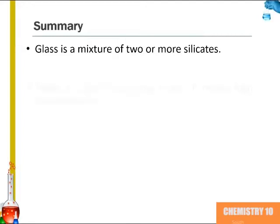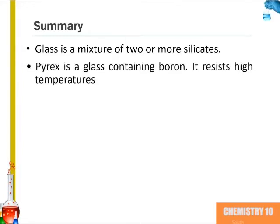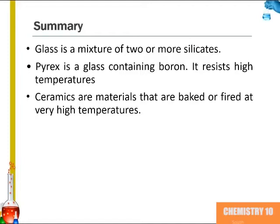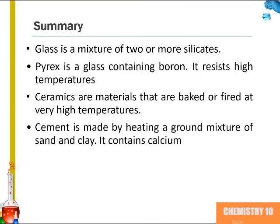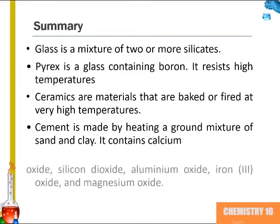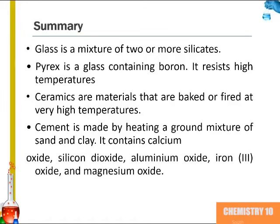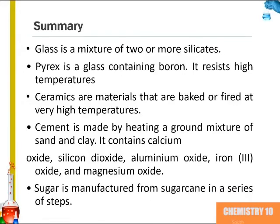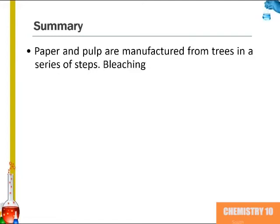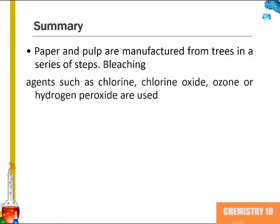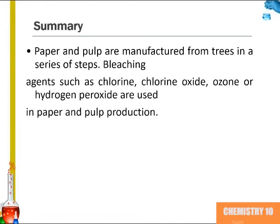In summary, glass is a mixture of two or more silicates. Pyrex is a glass containing boron and resists high temperatures. Ceramics are materials that are baked or fired at very high temperatures. Cement is made by heating a ground mixture of sand and clay, and also contains calcium oxide, silicon dioxide, aluminum oxide, iron three oxide, and magnesium oxide. Sugar is manufactured from sugarcane in a series of steps. Paper and pulp are manufactured from trees in a series of steps. Bleaching agents such as chlorine, chlorine oxide, ozone, or hydrogen peroxide are used in paper and pulp production.